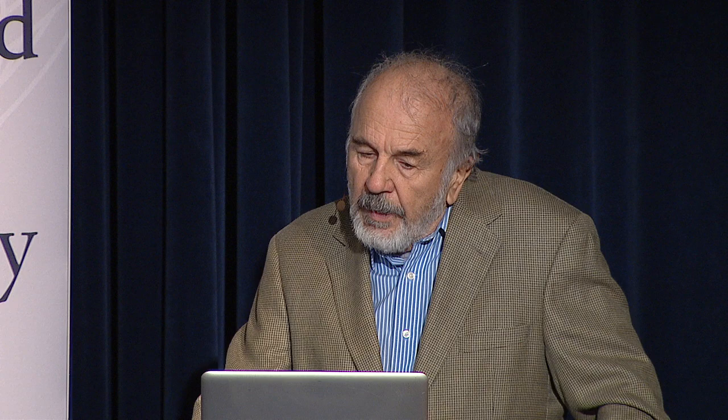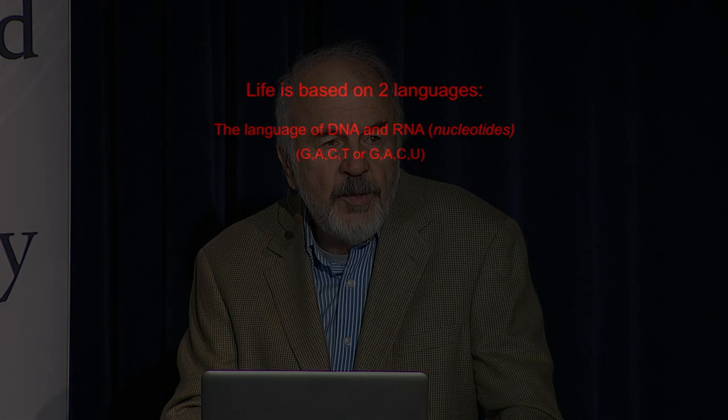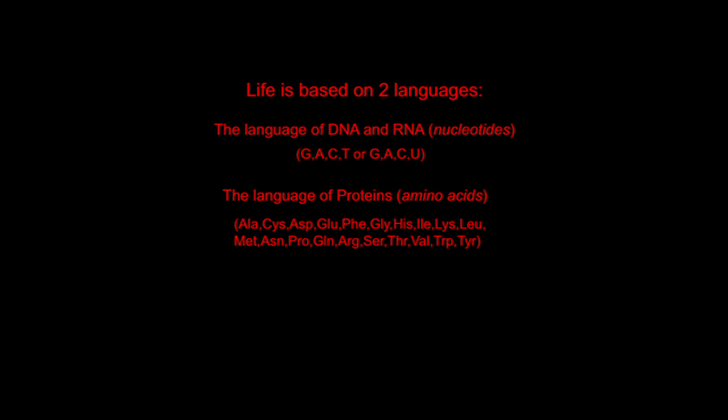To go to the basics, life is based on two languages. The language of DNA and RNA are nucleotides — GACT, or GACU in the case of RNA. And the language of proteins is amino acids, and there are 20 of those. These two languages are as different as English and Chinese. The characters or alphabets are unrelated, the structures are unrelated, the syntax is unrelated.